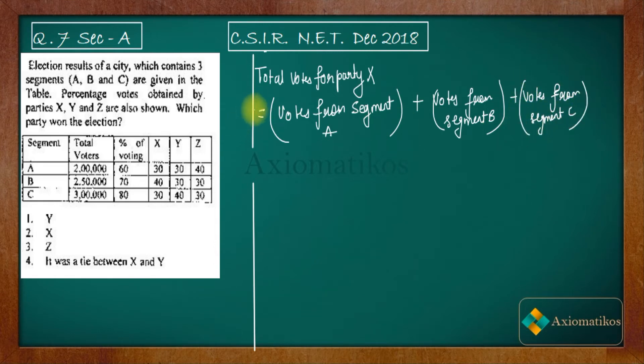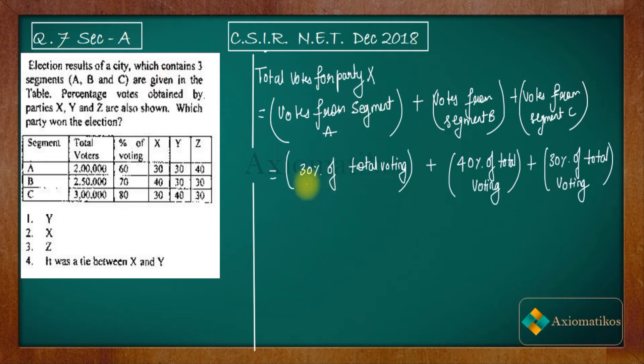All right, so we have this thing. Now let us try to calculate votes from segment A. So see, this is what we are getting: 30% of total voting, 40% of total voting, and 30% of total voting. So from segment A we are getting how many votes? 30% of the total voting in segment A.